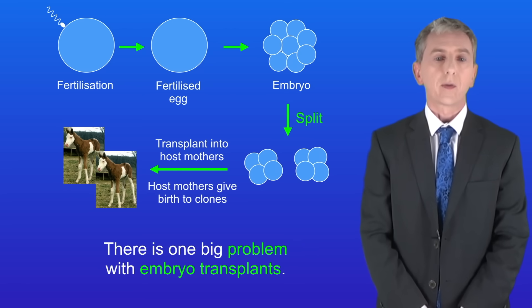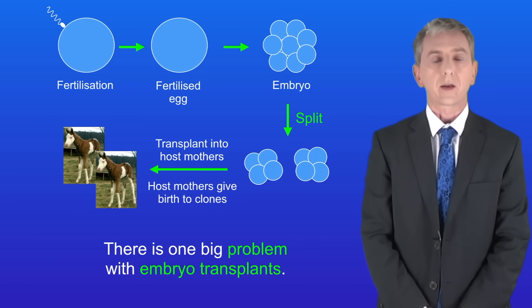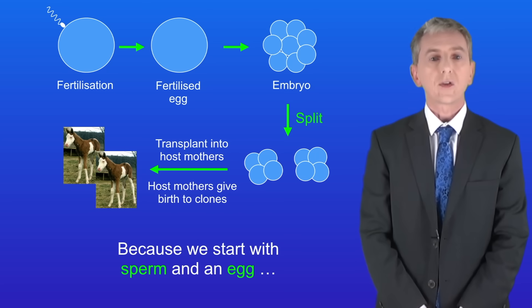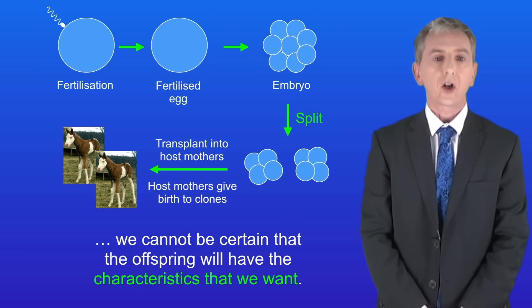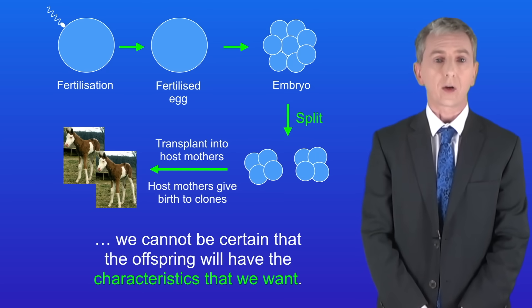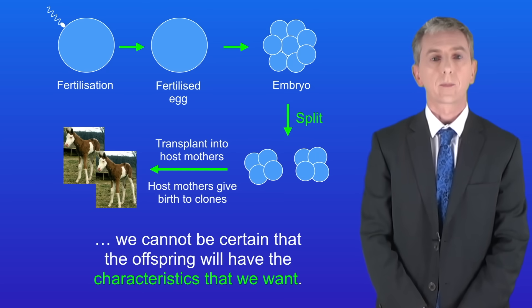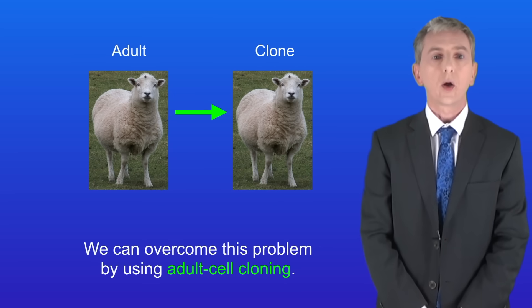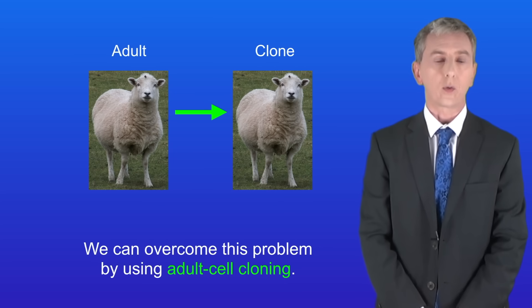Now there's one big problem with embryo transplants. Because we start with sperm and an egg we cannot be certain that the offspring will have the characteristics that we want. We can overcome this problem by using adult cell cloning.